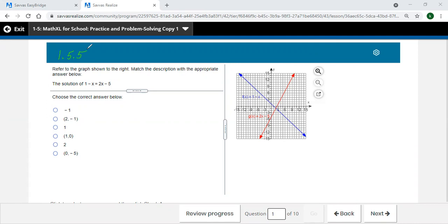Refer to the graph shown to the right. Match the description with the appropriate answer below. The solution, so they're saying 1 minus x equals 2x minus 5, and you can look at the graph to solve this.